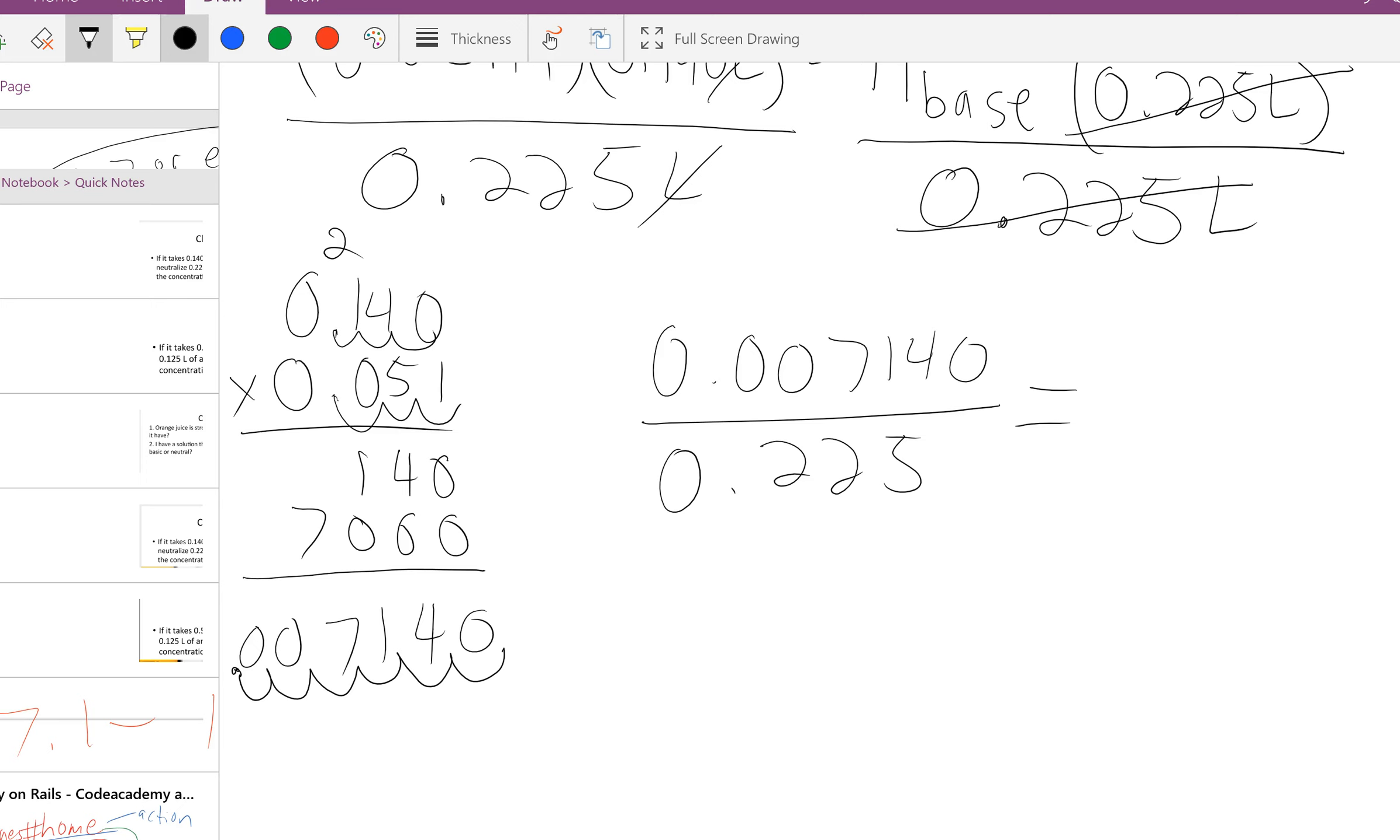Now, I am not going to make you do that math, but if you did and you pull out a calculator and solve it, 0.00714 divided by 0.225 gives you an answer of 0.0317 molarity.